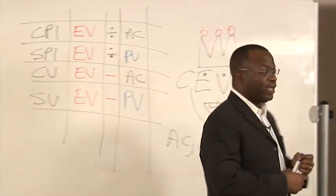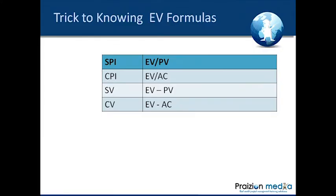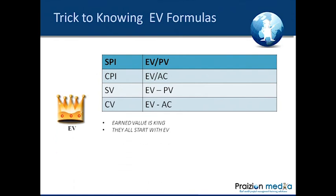Let's take a closer look at the screen and see how all of it looks by the time we are done. We have something that looks like this: SPI, CPI, SV, and CV. And that's how you get those formulas. Earned value is king.